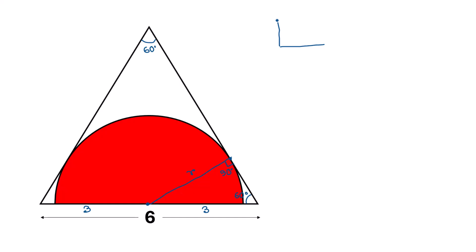Now focus on this sub-triangle. This angle is 60 degrees, this angle is 90 degrees. The side opposite to the 60-degree angle is r, so this length is r. The side opposite to the 90-degree angle is 3, so the hypotenuse is 3.